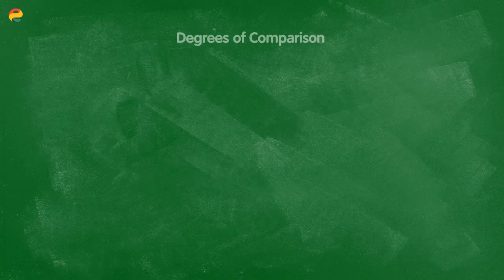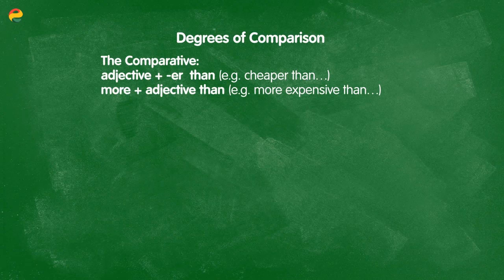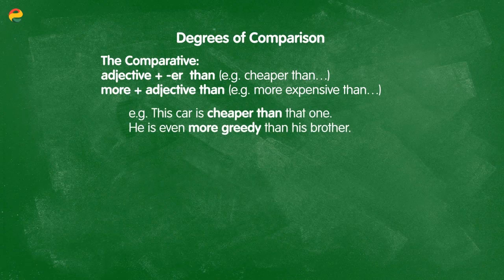When we need to compare different qualities of people or things, we use the comparative degree. The comparative degree is formed by using an adjective with the -er ending and 'than', or by using the structure 'more than' with an adjective.